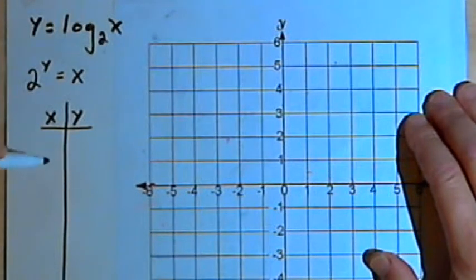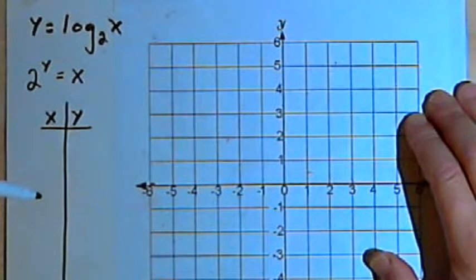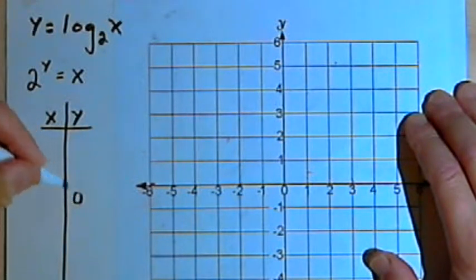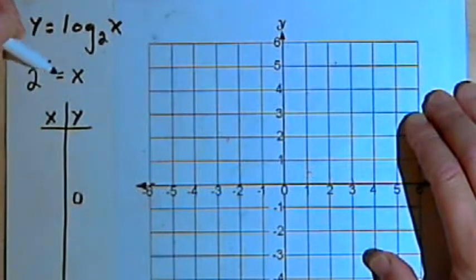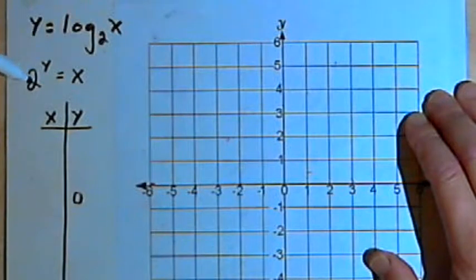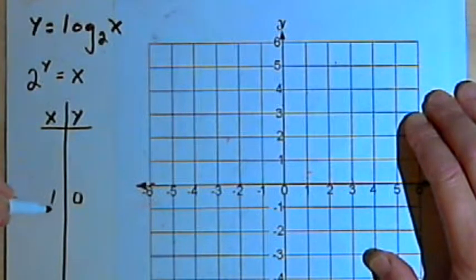Instead of starting out with x values and figuring out what the y values would be, I'm going to start out with y values and figure out what the x's would be. So let's start out with y equals 0. When y is 0, x is going to be equal to 2 to the 0 power, and any number to the 0 power is just 1. So I'm going to have a point at (1, 0).